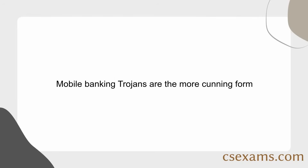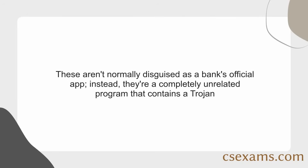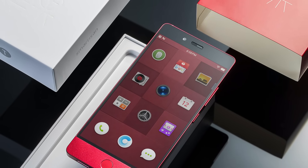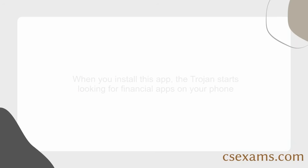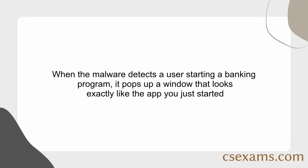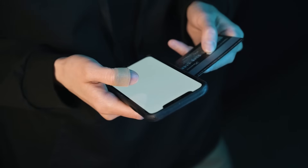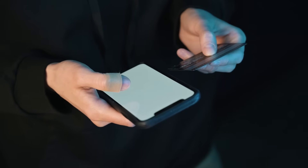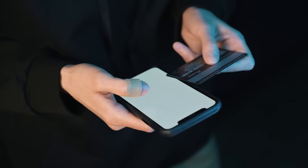Mobile banking Trojans are the more cunning form. These aren't normally disguised as a bank's official app. Instead, they're a completely unrelated program that contains a Trojan. When you install this app, the Trojan starts looking for financial apps on your phone. When the malware detects a user starting a banking program, it pops up a window that looks exactly like the app you just started. If done correctly, the user will not notice the change and will enter their credentials into the phony login page. The malware creator then receives these details.